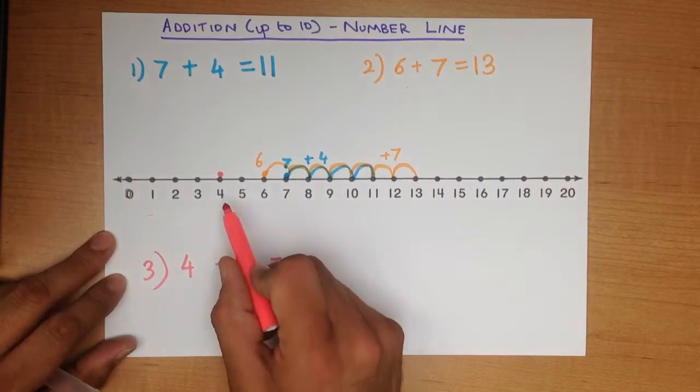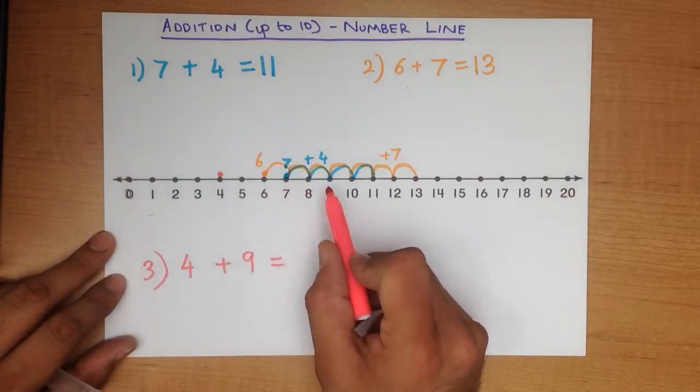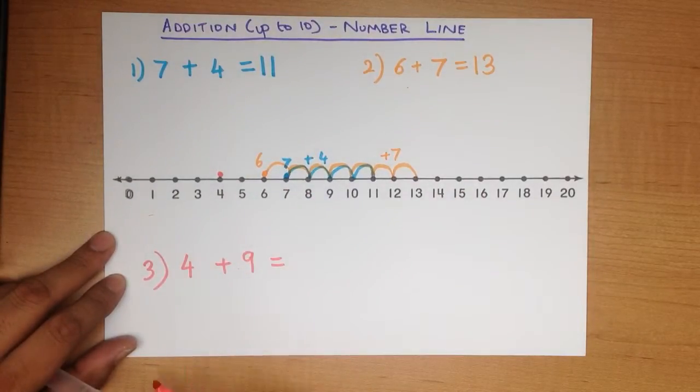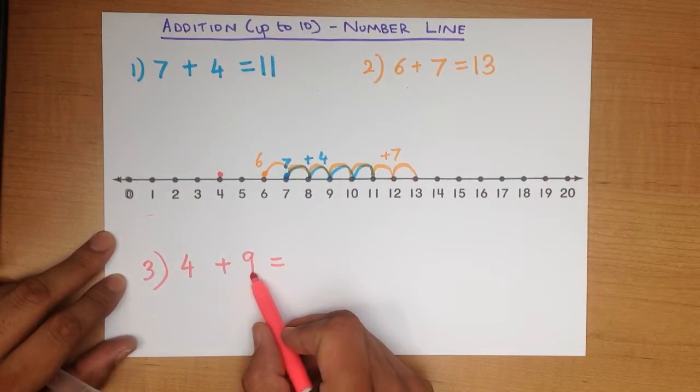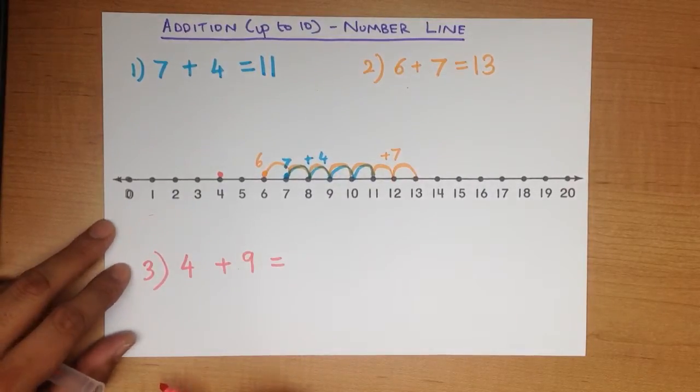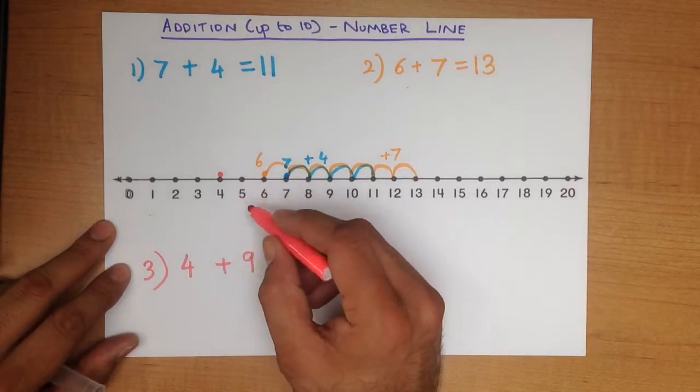We are adding, so therefore we are going forward. We are jumping forward. How many jumps are we going to make? We are going to make 9 jumps forward. So, count these with me.